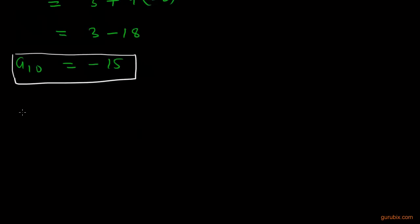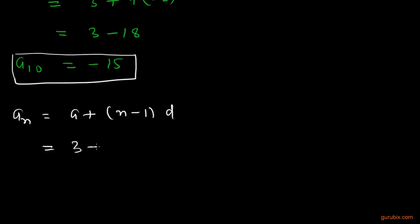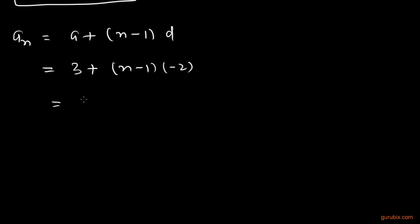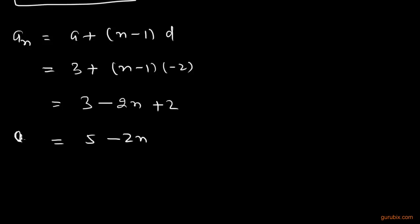Now we have to find the nth term, An. An = A + (n-1)×D = 3 + (n-1)×(-2) = 3 - 2n + 2 = 5 - 2n. This is the nth term of the AP.